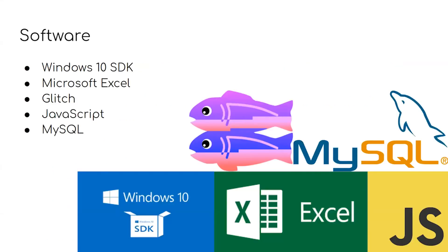Some technologies used in our project: Glitch is where we made our own website and ran the game using JavaScript. The game's code was modified to create and send CSV files when the player finishes their session. The CSV file may then be imported to Excel's Data Streamer to simulate a microcontroller at a steady rate. MySQL would have been used to store all the data from every player session.